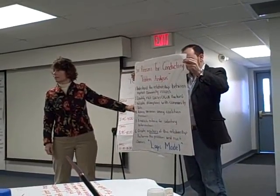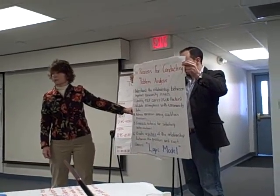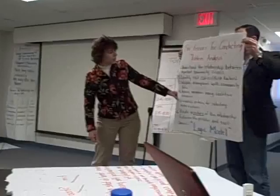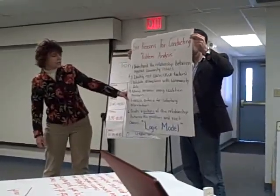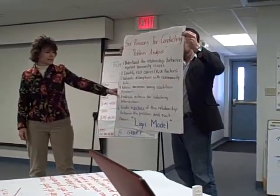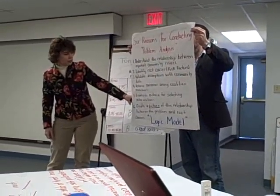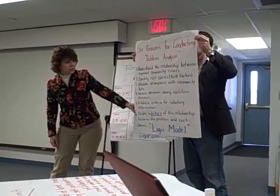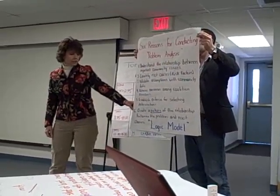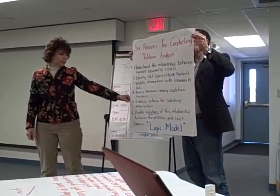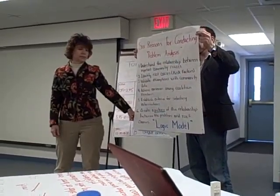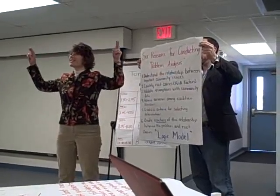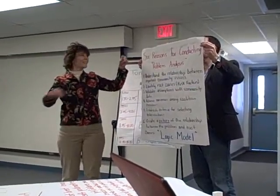Figure out what's going on in our community and have the data to prove it. Achieve consensus among coalition members — if you don't have consensus among your members, you're in trouble. Establish criteria for selecting the interventions. Create a picture of the relationship between the problem and root causes — for example, a logic model.